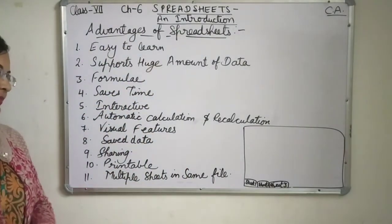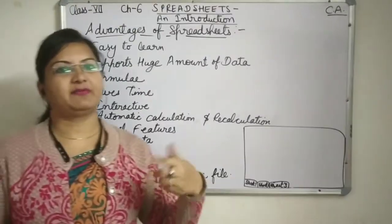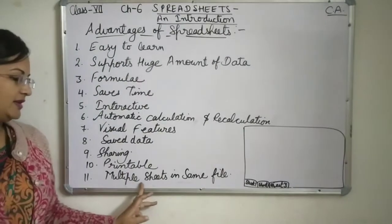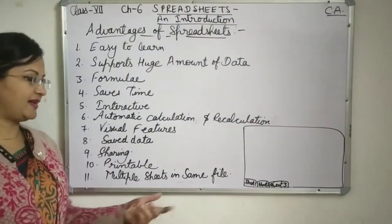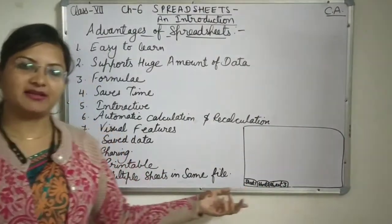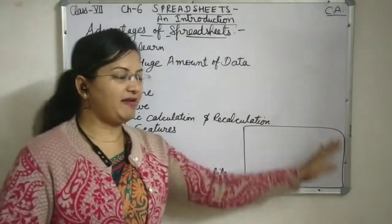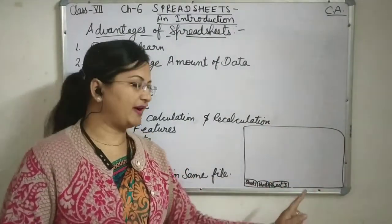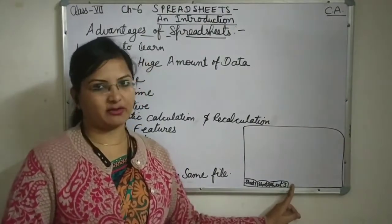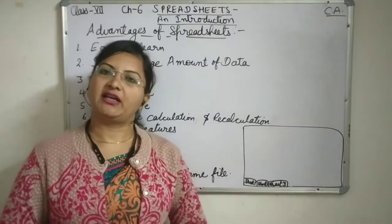Then, printable: once we have prepared the spreadsheet file, we can print it. Then, multiple sheets in the same file: as already discussed, there are many sheets in a single file — in a single workbook. A single file by default has three sheets and there will be a new sheet button. When we click on it, new sheets will be inserted automatically.